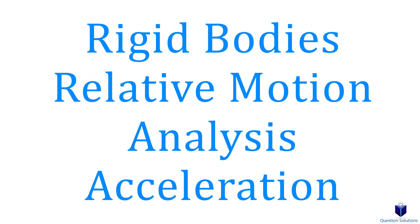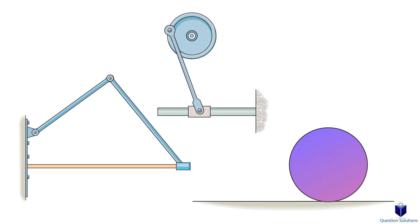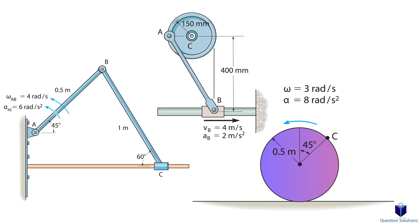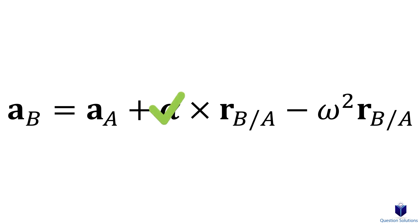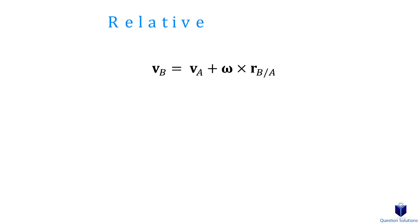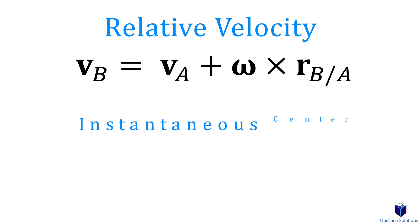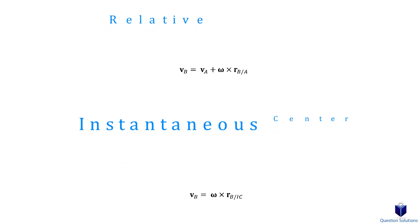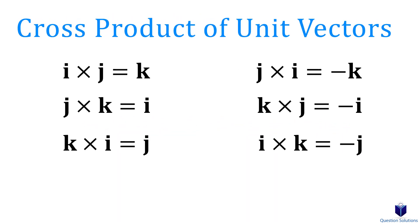We talked about relative velocity, so now it's time to talk about relative acceleration. If we know the acceleration of one point, our goal is to figure out the acceleration of another point using this equation. We can also figure out angular acceleration or angular velocity using it. Some questions in this chapter will ask you to find velocity along with acceleration, so you can use the relative velocity equation or the instantaneous center of zero velocity. If you're unfamiliar with those, please check the description. Also don't forget the cross products of unit vectors.